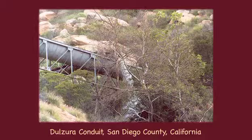In open channels, the boundary roughness varies with the nature of the material surrounding the channel — either plastic, steel, concrete, or, in the case of unlined canals or natural streams, soils and vegetation. This photo shows the Dulzura conduit in San Diego County, California, overflowing after heavy rains on March 5, 2005.